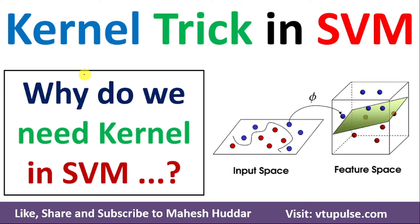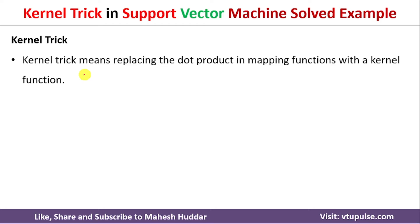We will try to understand what is the kernel trick. Kernel trick means replacing the dot product in the mapping function with the help of a kernel function. That is given by k(x, y) = φ(x) · φ(y). Here, k(x, y) is the kernel, phi is the mapping function, and x and y are the data points.